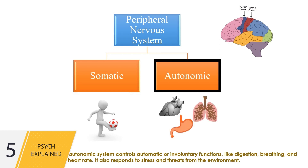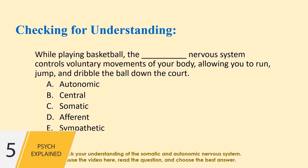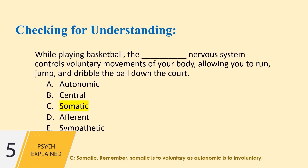The autonomic system also responds to stress and threats from the environment. Check your understanding of the somatic and autonomic nervous system — pause the video here, read the question, and choose the best answer. The answer is C: somatic. Remember, somatic is to voluntary as autonomic is to involuntary.